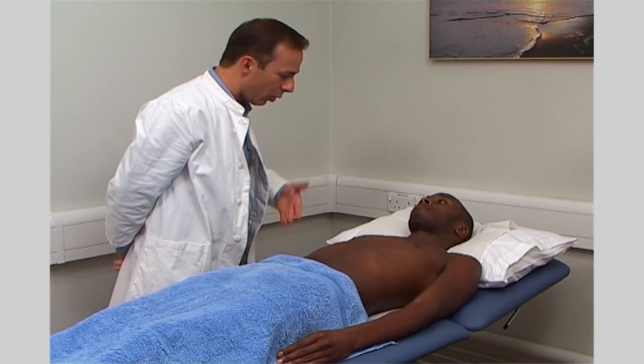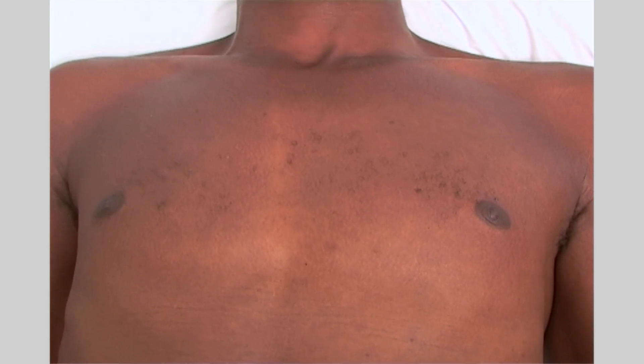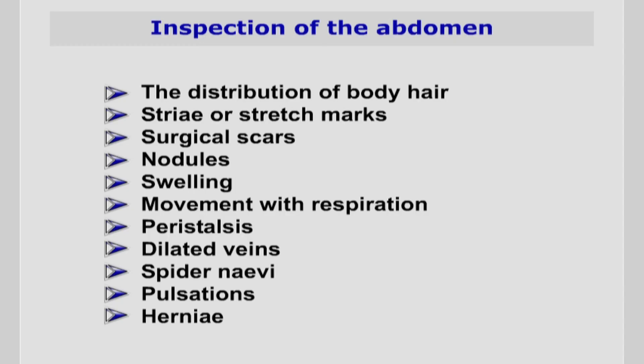Having examined the face and mouth, move on to inspection of the thorax and abdomen. Expose the abdomen down to the groin area, using a towel or blanket to preserve the patient's modesty. Evaluate the presence and significance of: the distribution of body hair; striae or stretch marks; surgical scars; nodules; swellings; abdominal movement with respiration; peristalsis; dilated veins; spider naevi; pulsations; and hernias.